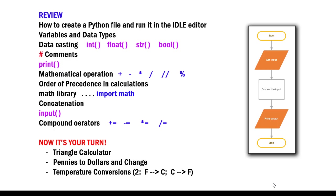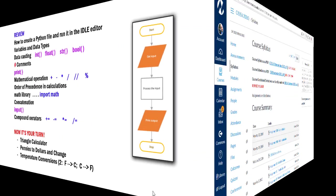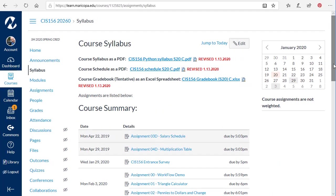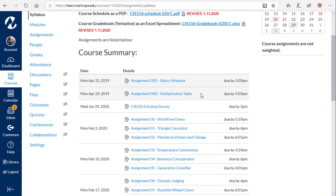I'm going to jump over to Canvas. So I'm now in our Canvas course site. I've gone into the syllabus area. You can also get there to the assignments area. And here in the syllabus area, we see the assignments that are listed in their due dates. And I presented the workflow demo earlier in another video where I have you walk through with me and submit that for grading. So this week, we have the triangle calculator, the pennies and dollars and change, and the temperature conversions.